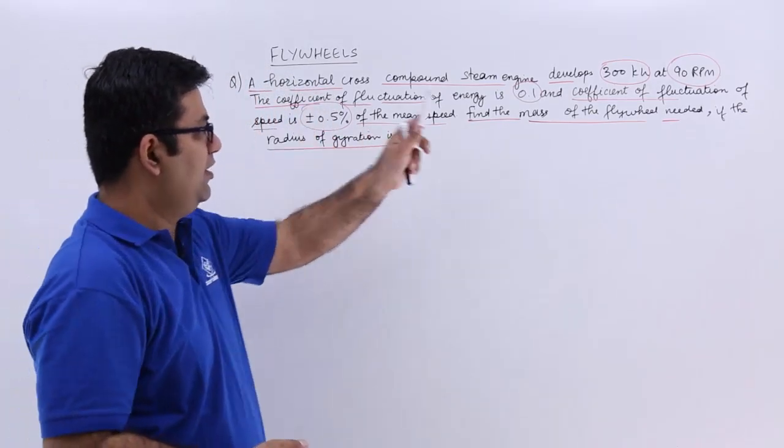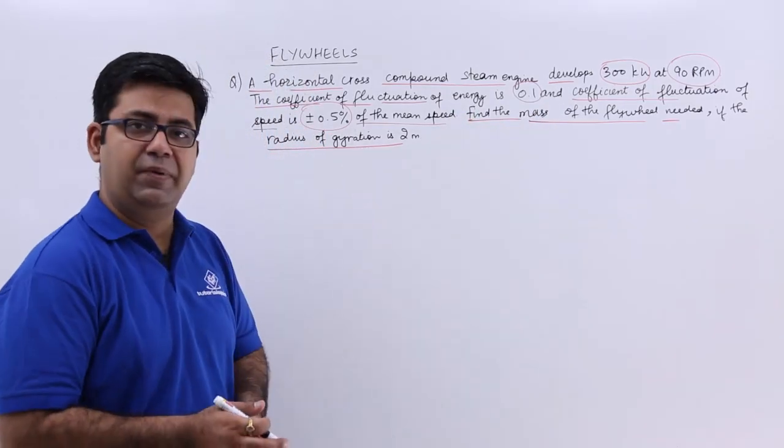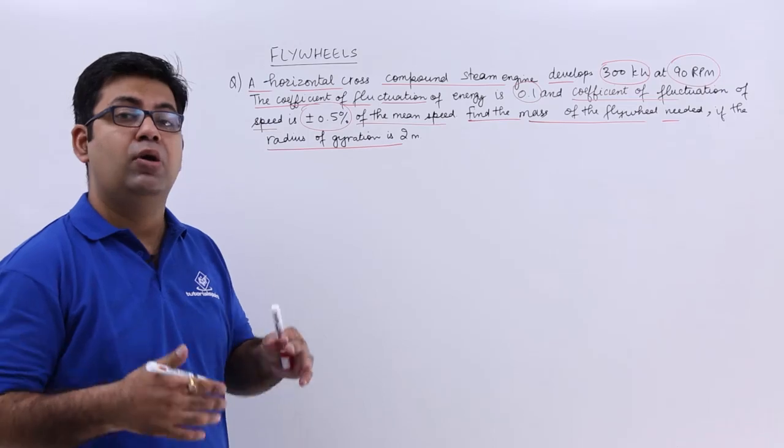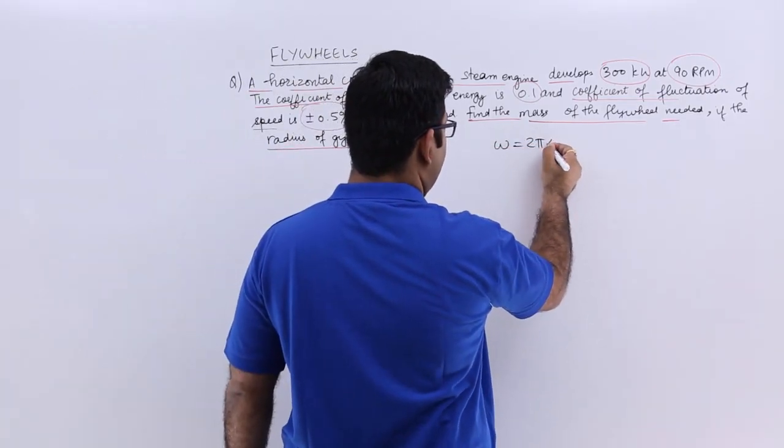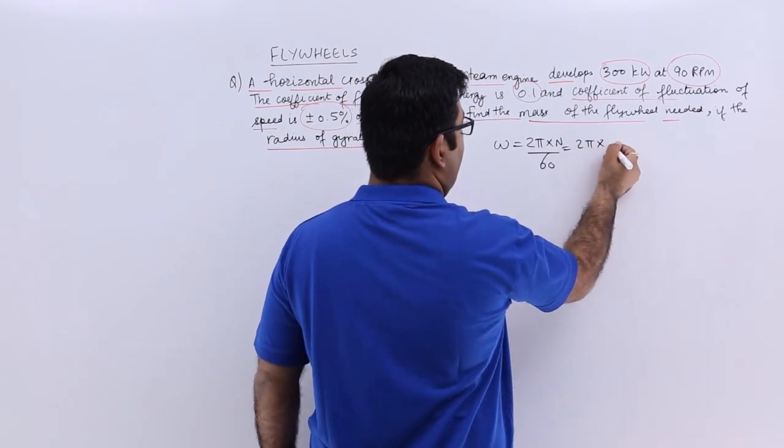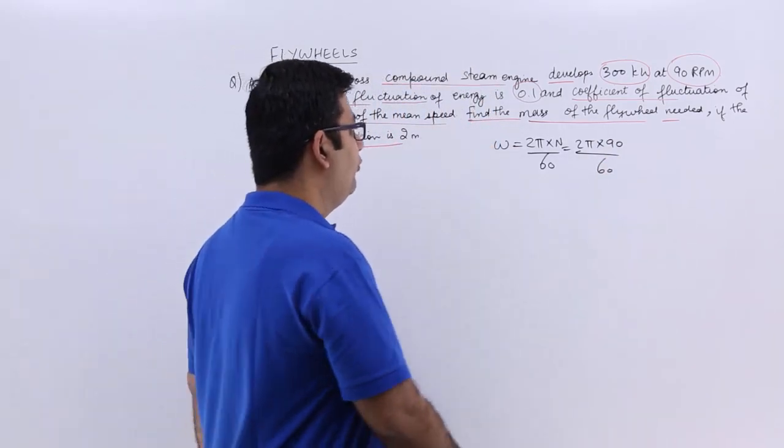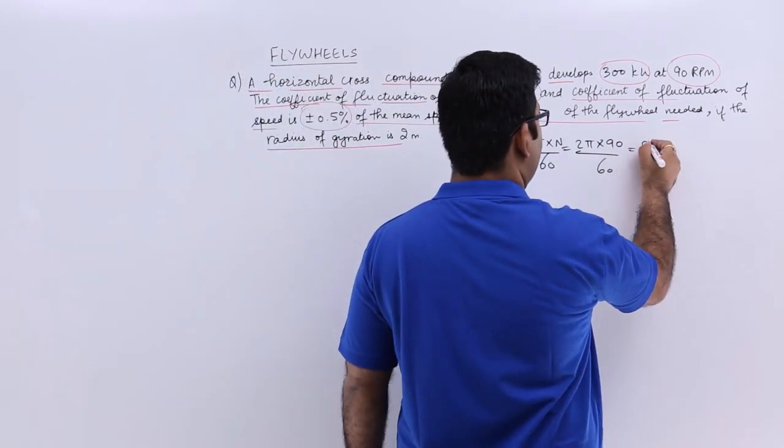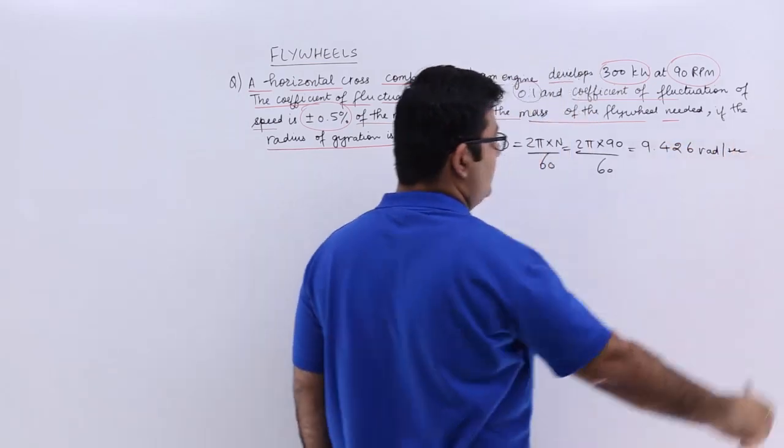You are given the power and mean rpm value. Corresponding to mean rpm, I can find out the mean omega, the angular speed. So omega equals 2π times n by 60, which means 2π times 90 upon 60. That will give you the mean omega which is 9.426 radians per second.